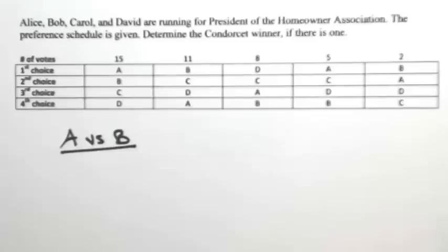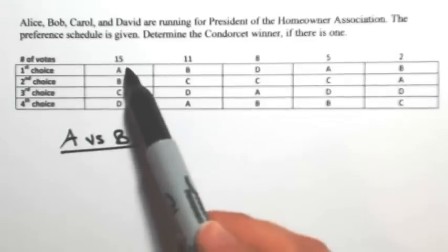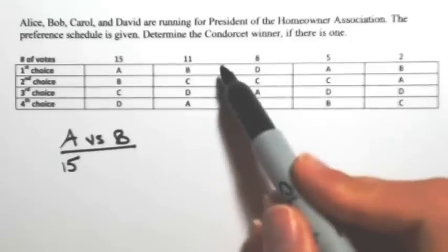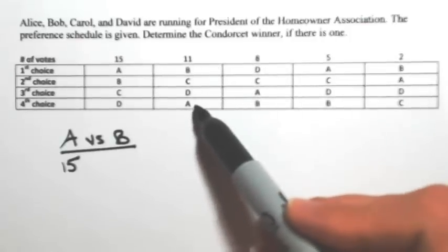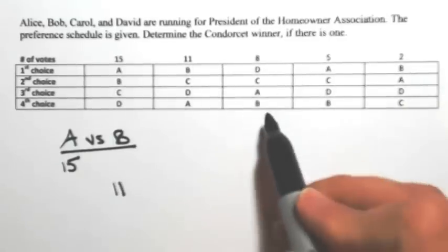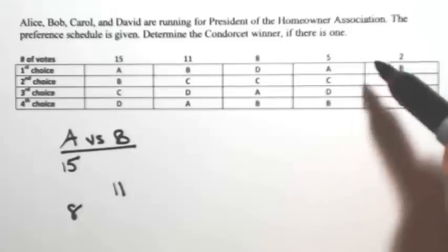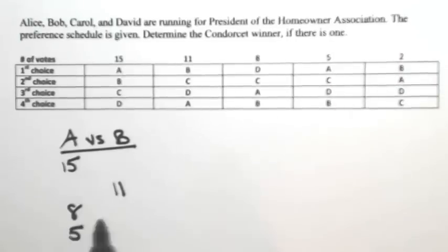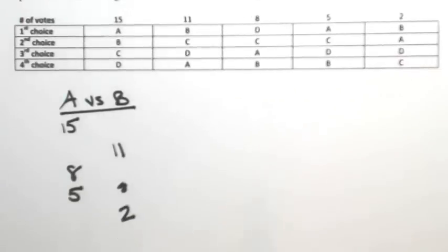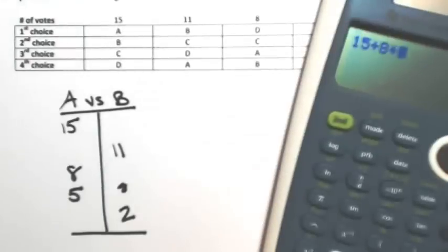Within each column, we're going to see which one is more preferred, A or B. In the first column, A was preferred over B by 15 voters. So A is going to get 15 votes. In the second column, B is preferred over A, so B is going to get 11 votes. In the third column, A is over B, so A is more preferred. So A gets 8 votes. In the fourth column, A is over B, so A gets 5. In the last column, B is over A, so B gets 2. So A wins out over B.